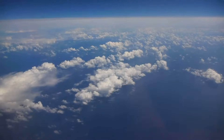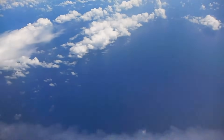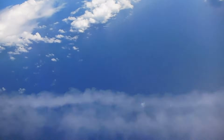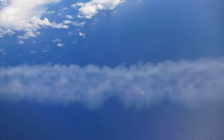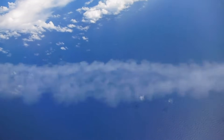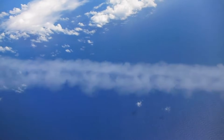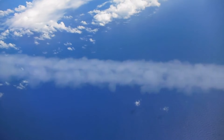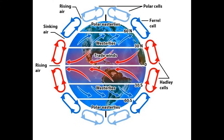Convection currents lead to global winds. These are winds that occur in each of the climate regions and affect the direction of weather systems on earth. For example, trade winds and westerlies affect the direction of tropical weather systems like hurricanes.